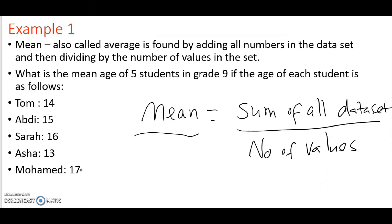So if I want to find the mean of this data set, first of all I have to sum them up: 14 plus 15 plus 16 plus 13 plus 17. And then I divide that by how many they are. So I have to count 1, 2, 3, 4, 5.